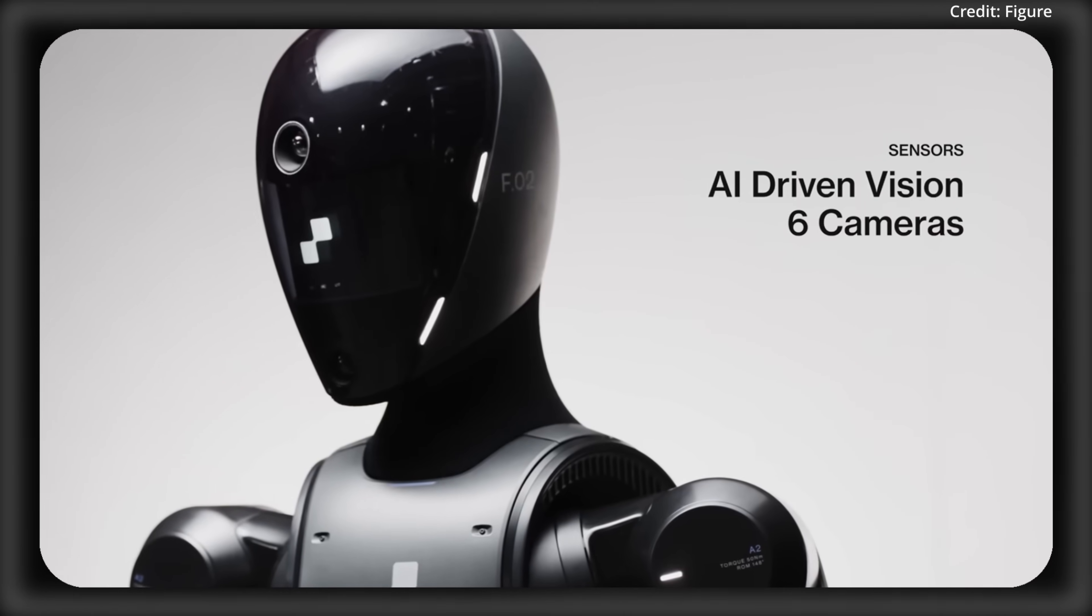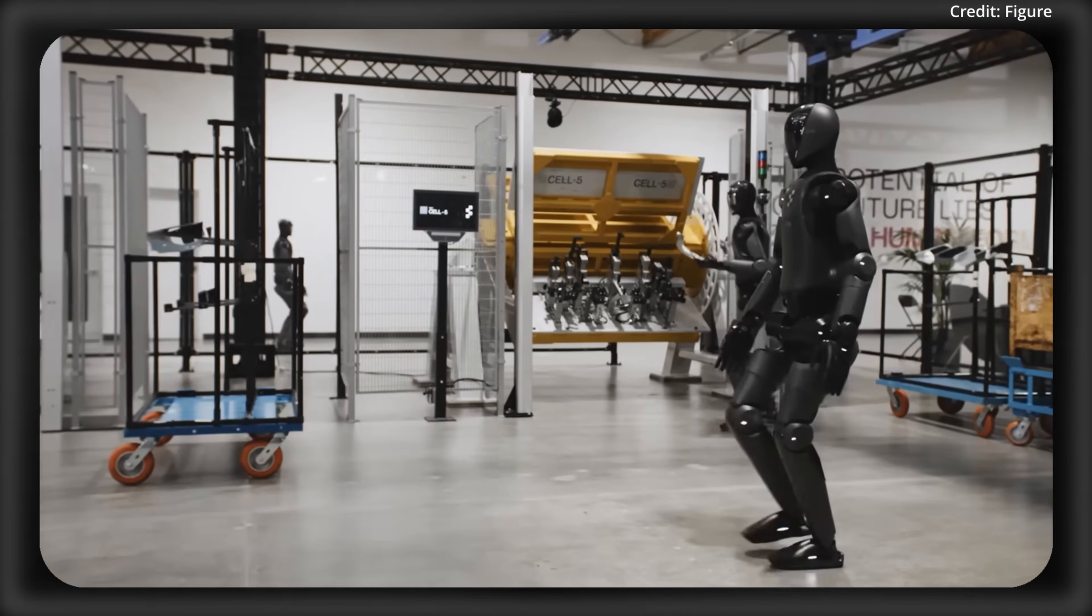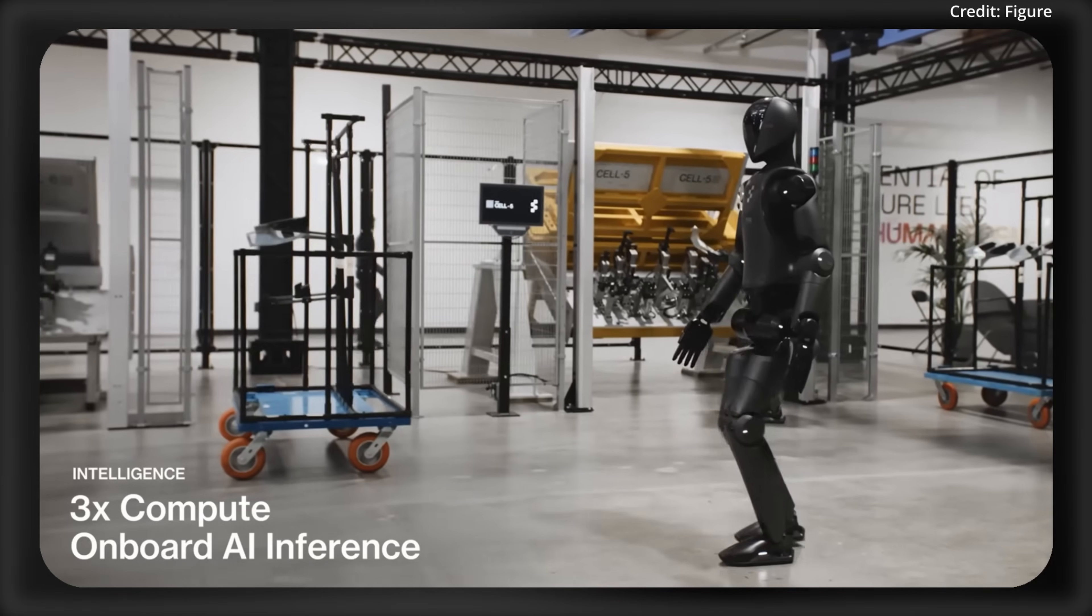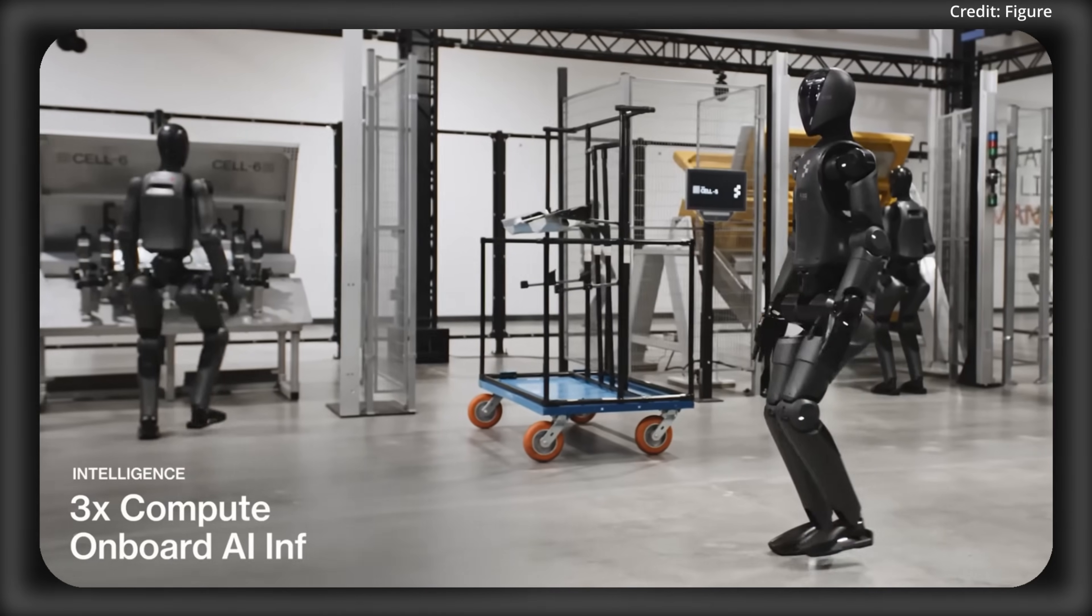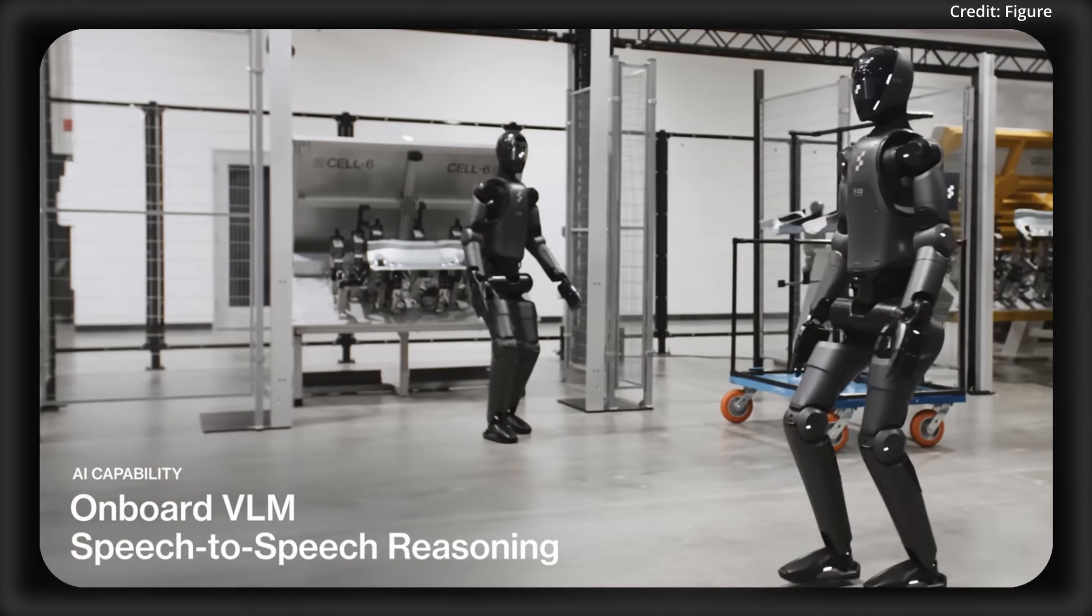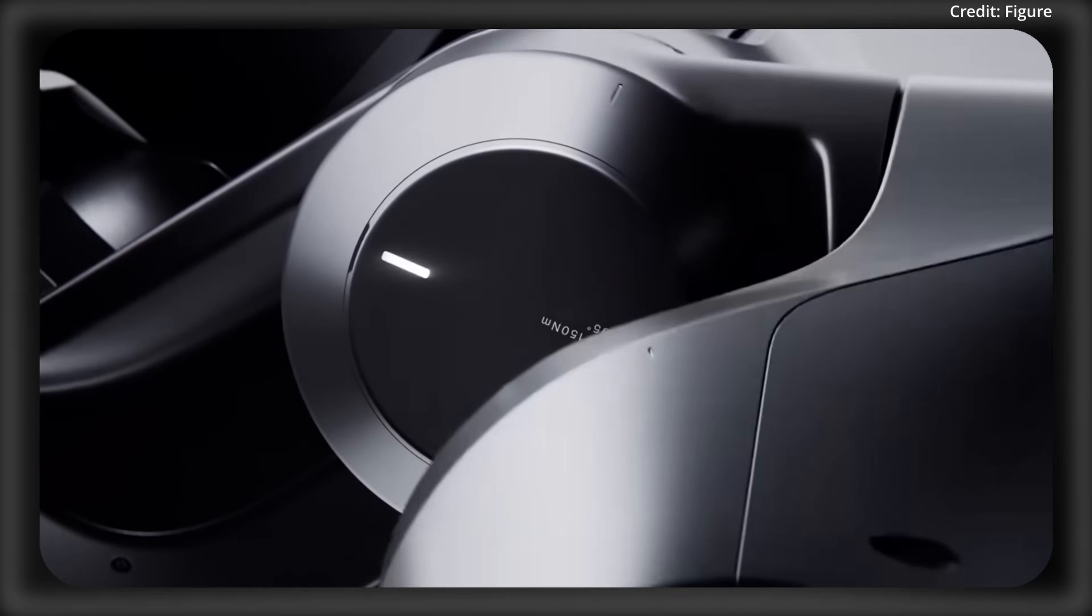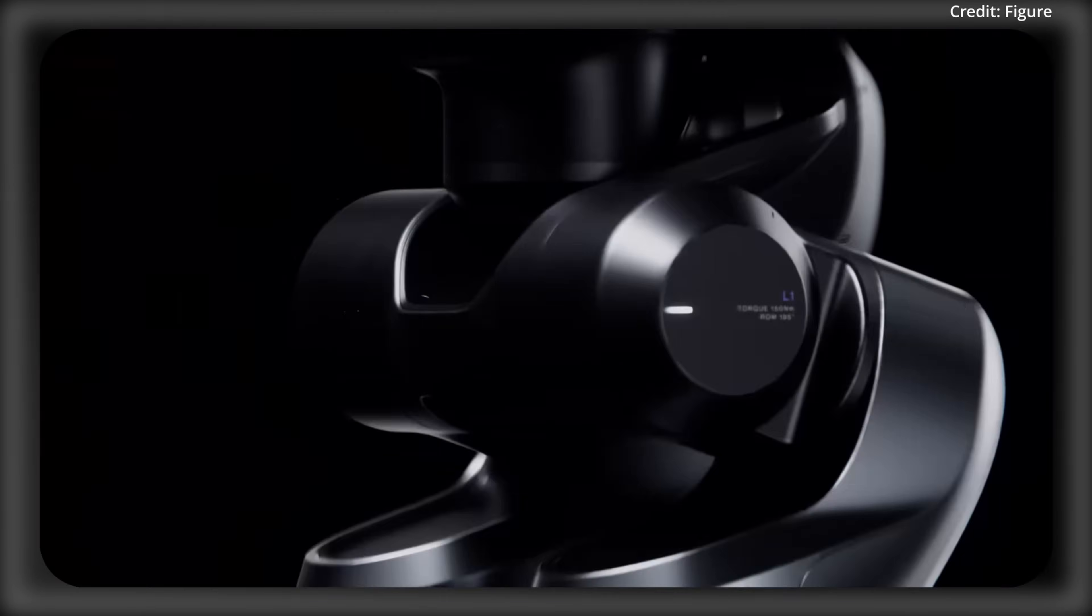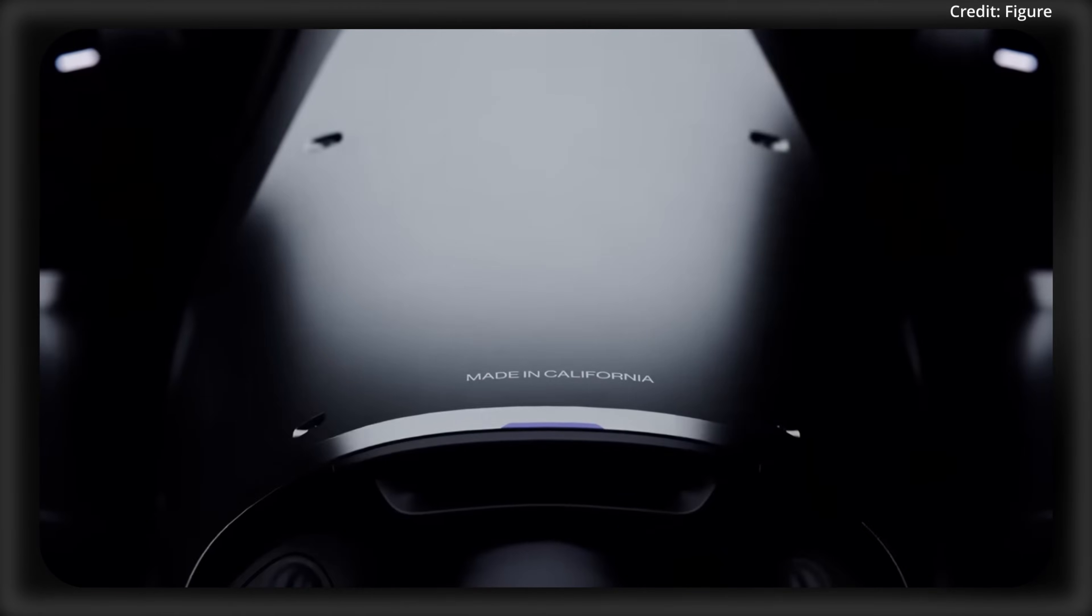Excitingly, this future looks like it will involve a generally intelligent R2-D2 or C-3PO that is your best friend and can hang out, do chores, or work together with other robots to complete tasks you tell it to by voice command. These robots can effectively learn on the fly, which leads to countless new possibilities, with Helix being the first vision-language action model to directly control an entire humanoid upper body from natural language.